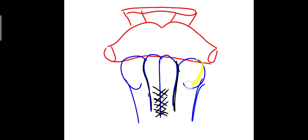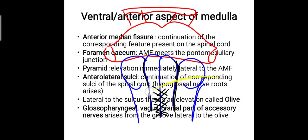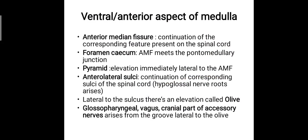These are the basic features you should draw: we have the olive, the pyramids, the anteromedian fissure, and the anterolateral sulcus. The ventral or anterior aspect of the medulla consists of the anteromedian fissure, which is the continuation of the corresponding feature present on the spinal cord. There is another point — the foramen cecum — where the anteromedian fissure meets the pontomedullary junction.